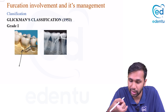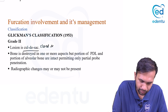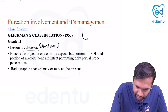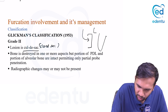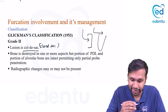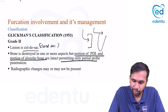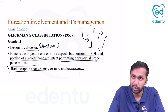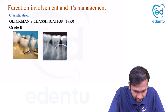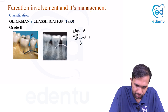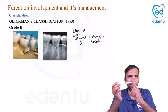In grade two, called a cul-de-sac — meaning a closed sac — the Nabers probe goes horizontally into the furcation but does not come out from the other side. The bone is destroyed in one or more aspects but a portion of the periodontal ligament and alveolar bone are intact, permitting only partial probe penetration. Radiographic changes may or may not be present.